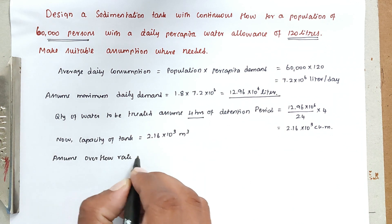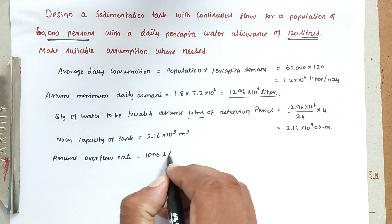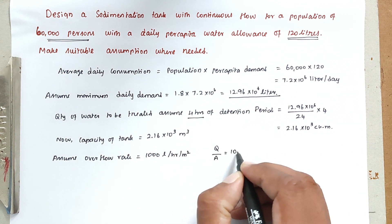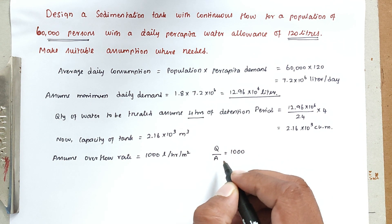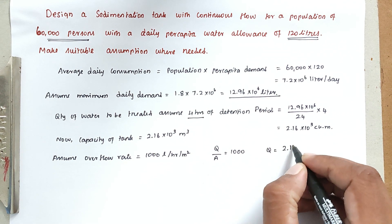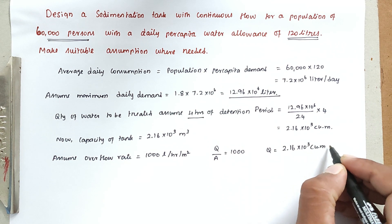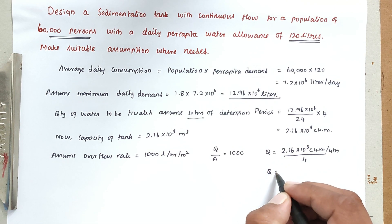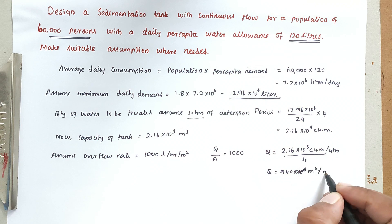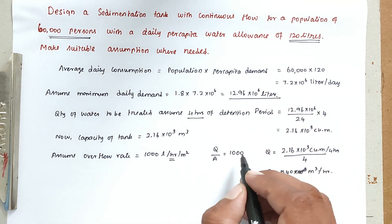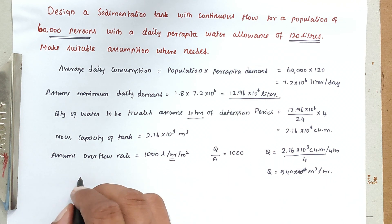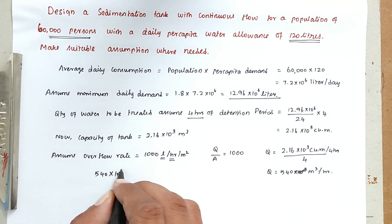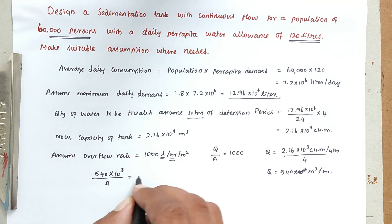We assume the overflow rate as 1,000 liters per hour per square meter. For the plan area, quantity divided by area equals 1,000. The flow rate Q equals 2.16×10³ m³ per 4 hours, which divided by 4 gives Q = 540 m³/hour. Converting to liters: 540×10³ liters per hour divided by area equals 1,000.